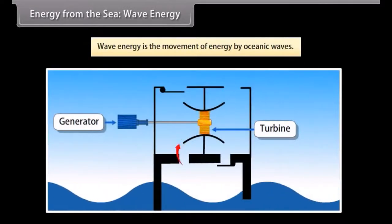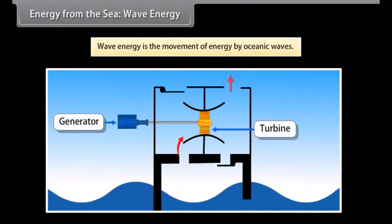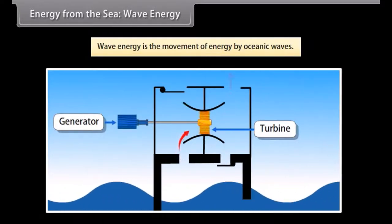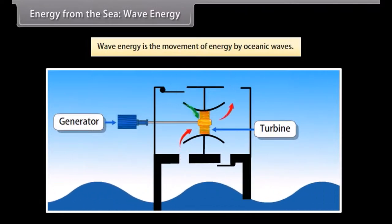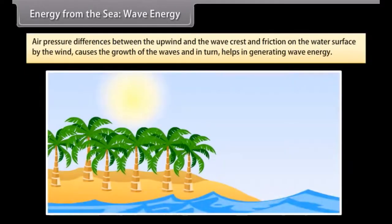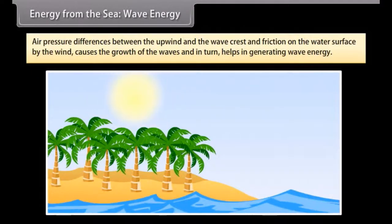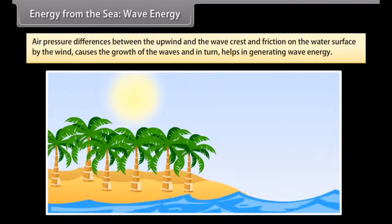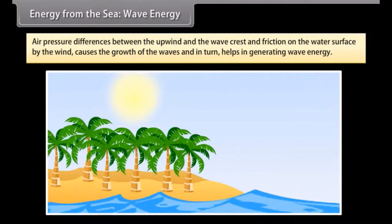Energy from the sea: Wave energy. Wave energy is the generation of energy by oceanic waves. We can capture this energy to do useful work, for example, electricity generation, water desalination, or the pumping of water into reservoirs. Waves are generated by wind passing over the surface of the ocean. As long as the waves move slower than the wind speed above the waves, there is an energy transfer from the wind to the waves. Both air pressure differences between the upwind and the wave crest, as well as friction on the water surface by the wind, makes the water undergo shear stress that causes the growth of the waves and in turn helps in generating wave energy.